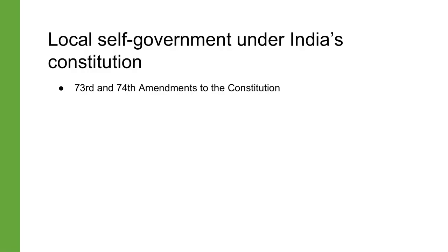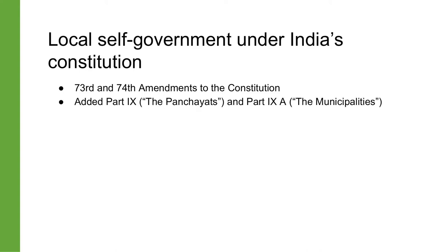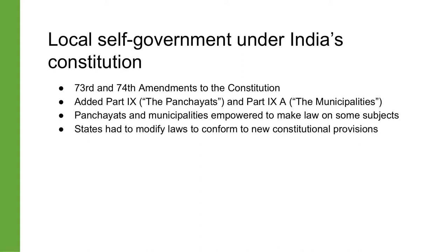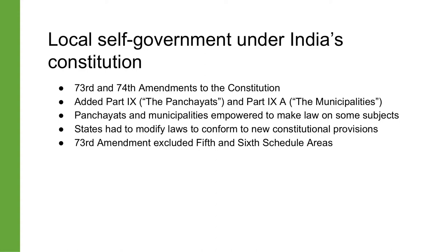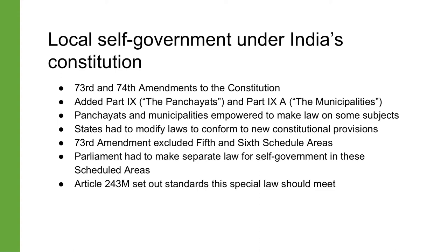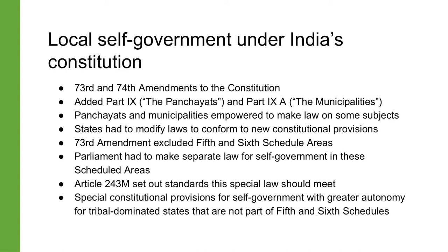Another important development took place in the 1990s when India modified the application of its local self-government laws for Scheduled Areas. The 73rd and 74th amendments added two new parts to the Constitution: Part 9 titled 'The Panchayats' and Part 9A titled 'The Municipalities.' Twenty-nine subjects were transferred to the panchayats and 18 to the municipalities. Within a year of the act coming into force, states were to make suitable modifications to their laws. The 73rd amendment clearly excluded the Fifth and Sixth Schedule areas, for which parliament was supposed to make separate enactments under Article 243M. For tribal-dominated states not falling under the Fifth and Sixth Schedules, there was special constitutional protection with greater autonomy.